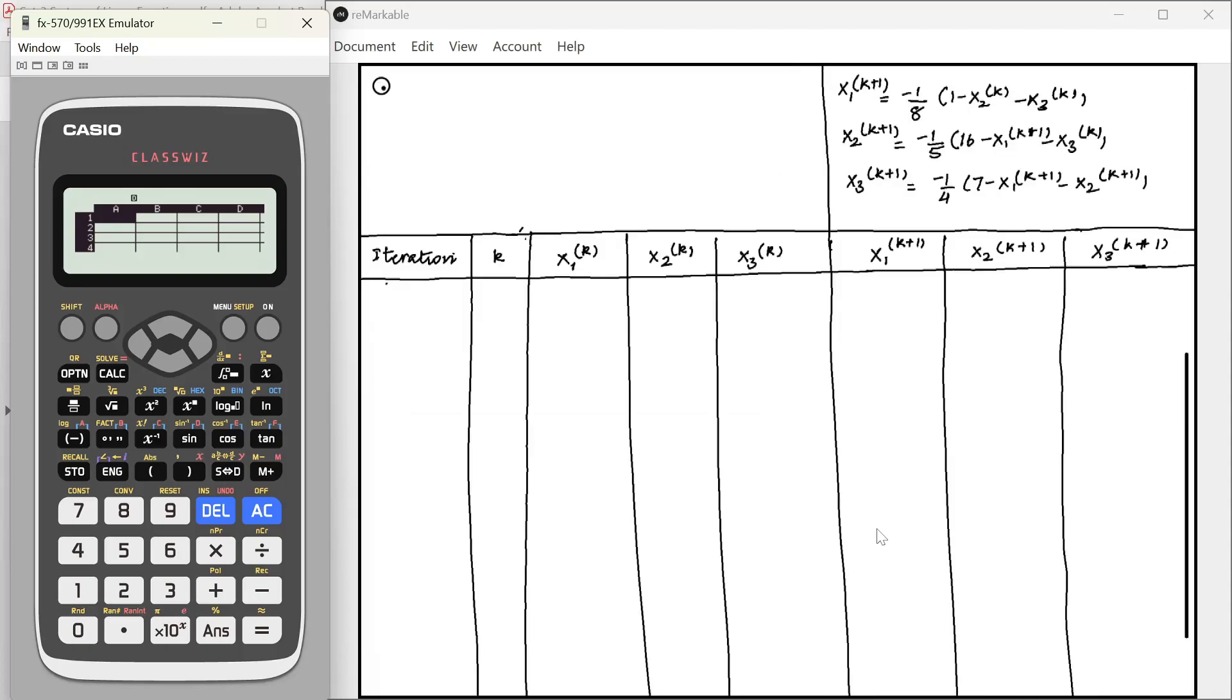I have made this sort of a table. I think making this table should be enough in the examination instead of writing each step one by one which will take up a lot of space as well. If I were giving the exam, I would have written it this way. I have iteration value of k, x1 k, x2 k, x3 k and the value of x1, x2, x3 for the next iteration which is given by these particular equations.